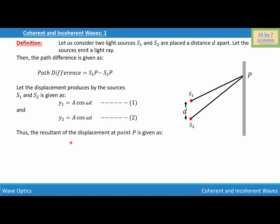The resultant displacement at point P is given as y = y1 + y2. Substituting the values of y1 and y2, we get y = A cos(ωt) + A cos(ωt), which simplifies to y = 2A cos(ωt). Let this be equation number three.